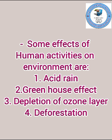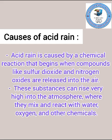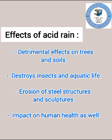Let's discuss some effects of human activities on the environment. The first one is acid rain. It is a form of precipitation with acidic components that fall from the atmosphere in wet or dry forms. It is caused by a chemical reaction when compounds like sulfur dioxide and nitrogen oxide are released into the air and mix with water to form acid rain.